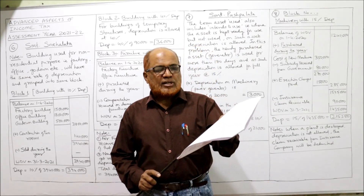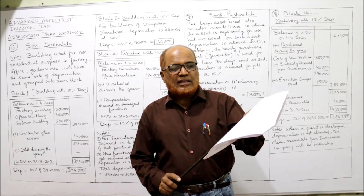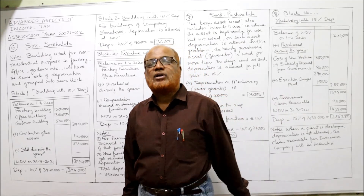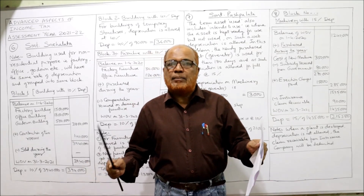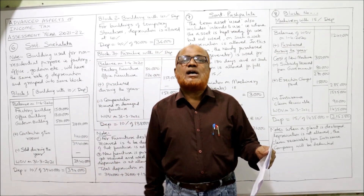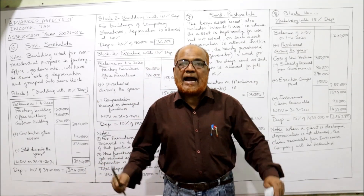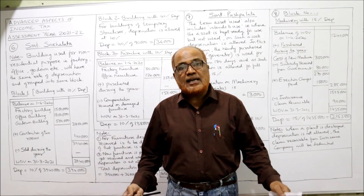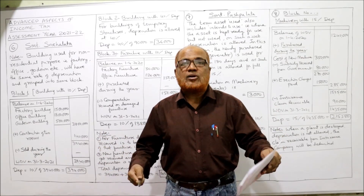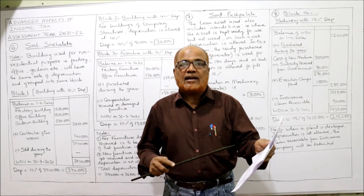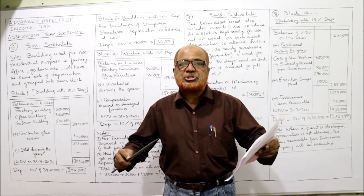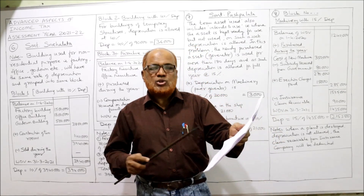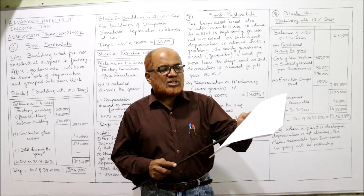Additional information: during the previous year, in the factory two more rooms were constructed at a cost of Rs. 1,40,000. In the factory building two more rooms are constructed — additions and renovation. That is capital expenditure, part of the building only, so it will be added, just like purchase of building.